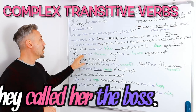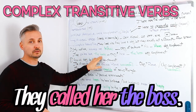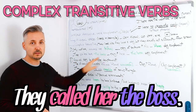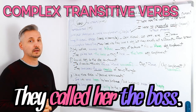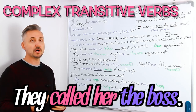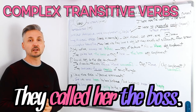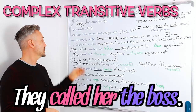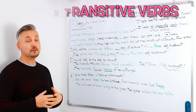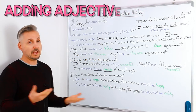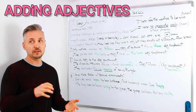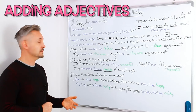They called her the boss. The object would be 'her,' and 'the boss' would be the object complement. So, they called her the boss. If you add an adjective, it can also be the complement of the object.